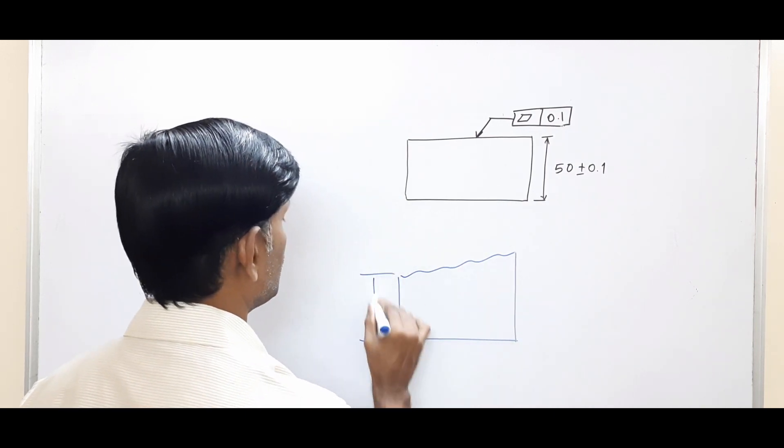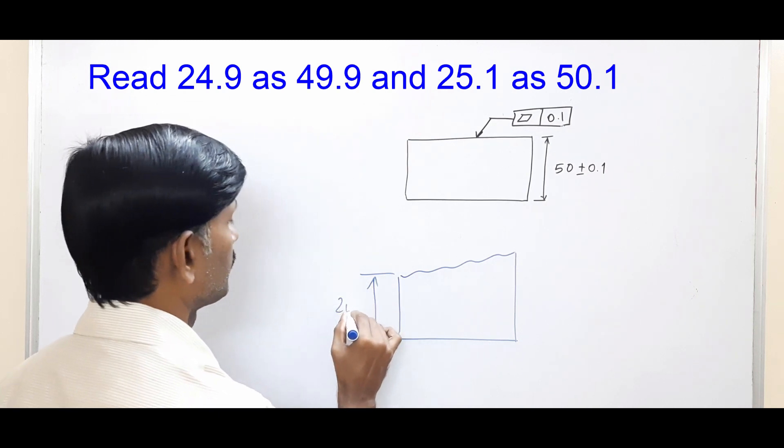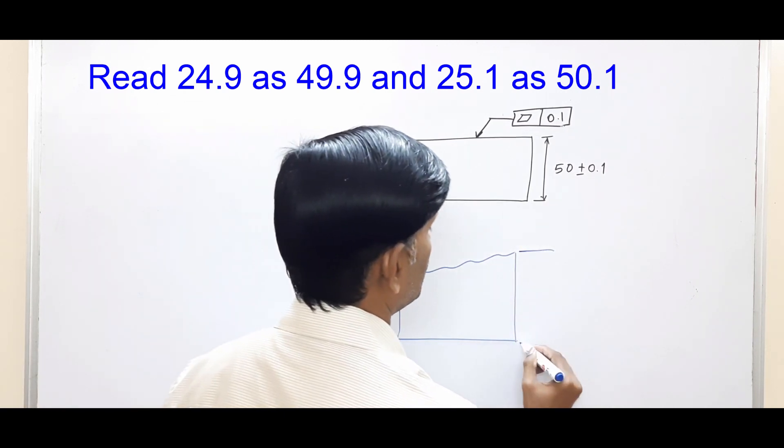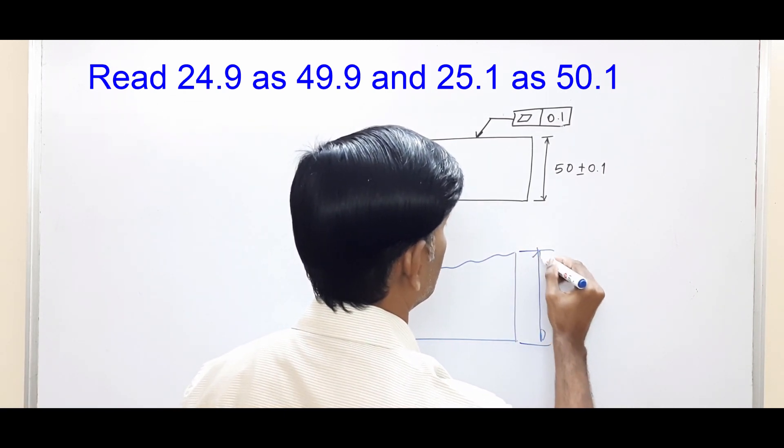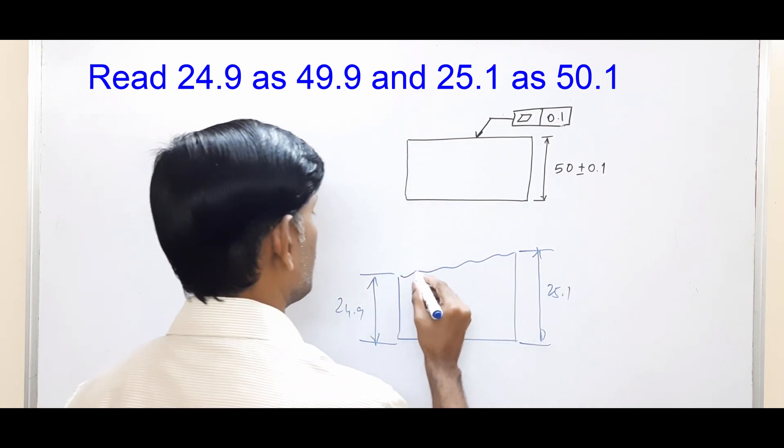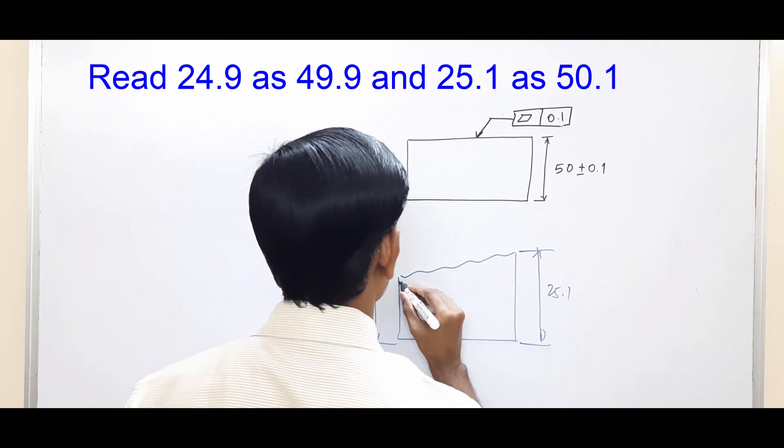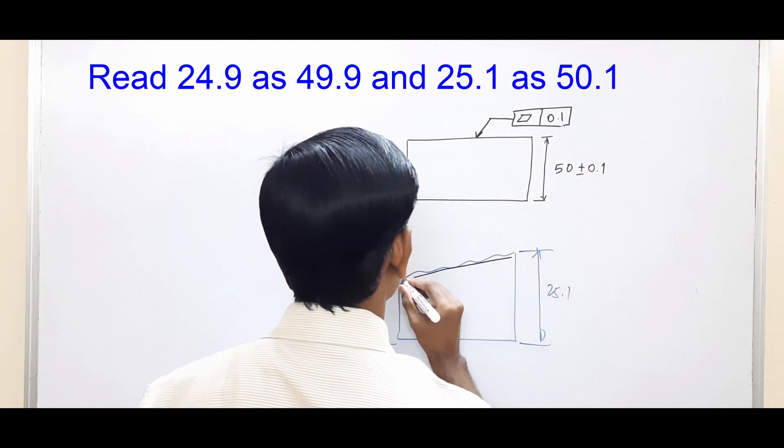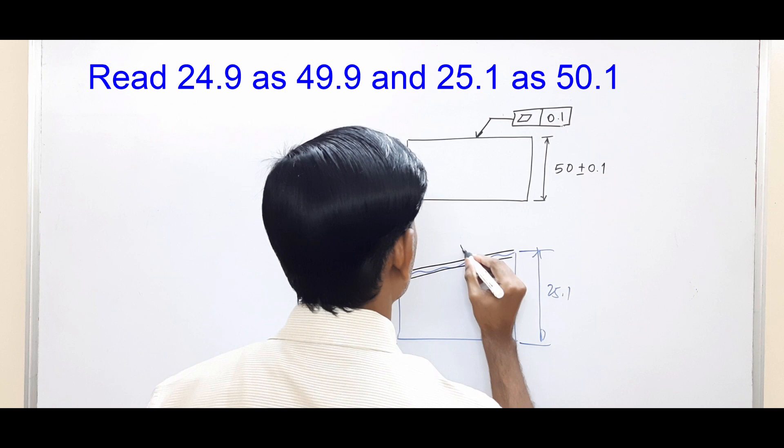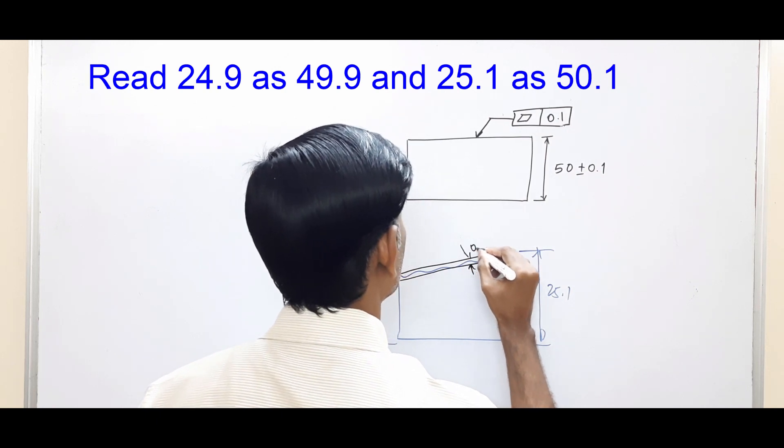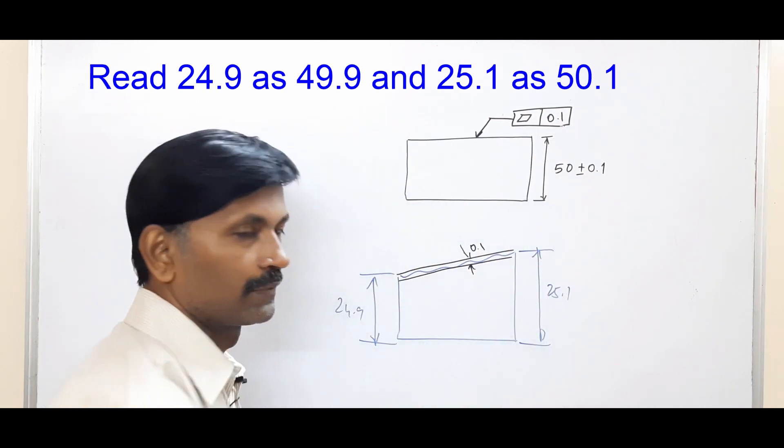So this side it can be 24.9, this side it can be 25.1, but this peak to valley - you join all the valleys, join all the peaks - this should not be more than 0.1. If this condition is satisfied, then the surface is considered to be flat.